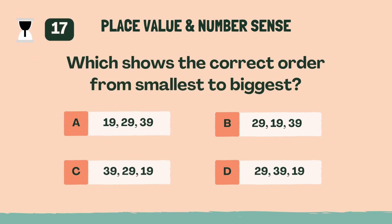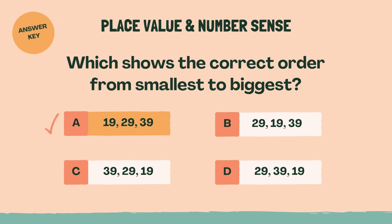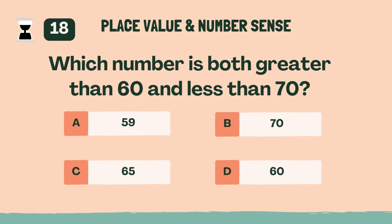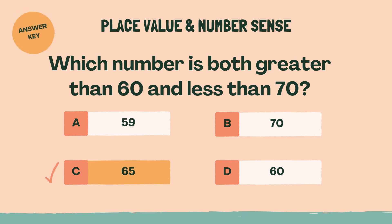Which shows the correct order from smallest to biggest? A, 19, 29, 39. Which number is both greater than 60 and less than 70? C, 65.